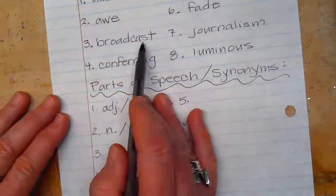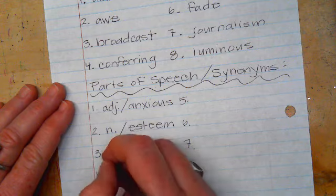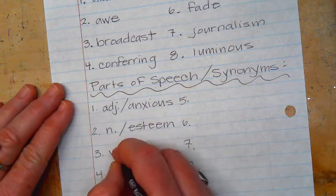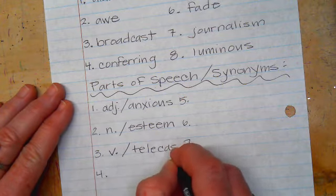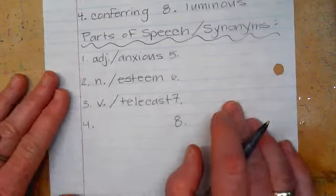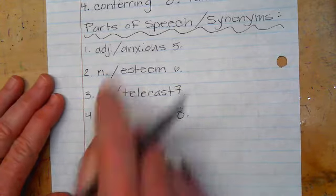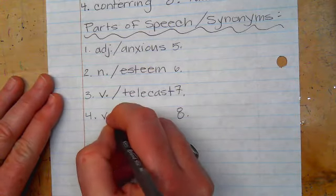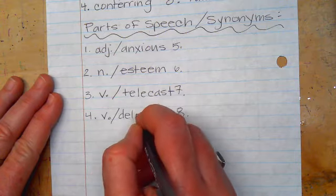And number three is broadcast. Broadcast is a verb or a noun. In this case, I think we had it as a verb, and my synonym was telecast. Number four is conferring. Conferring is a verb, and my synonym was deliberating.